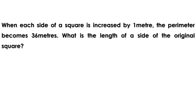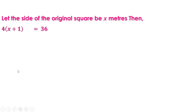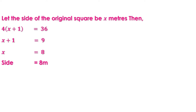What is the length of a side of the original square? Let the side of the original square be x meters. When it is increased by one meter, the side becomes x plus 1 meters. Given that the perimeter is 36, and perimeter equals 4 times the side, we get 4 into (x + 1) = 36. Taking 4 to the other side: x + 1 = 36/4 = 9, so x = 9 - 1 = 8.